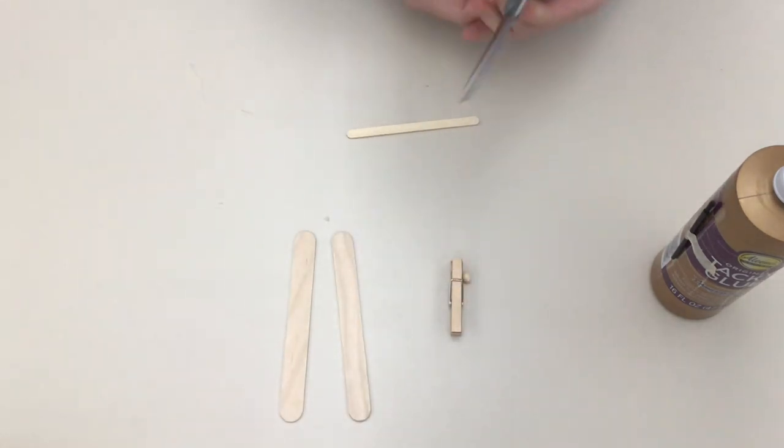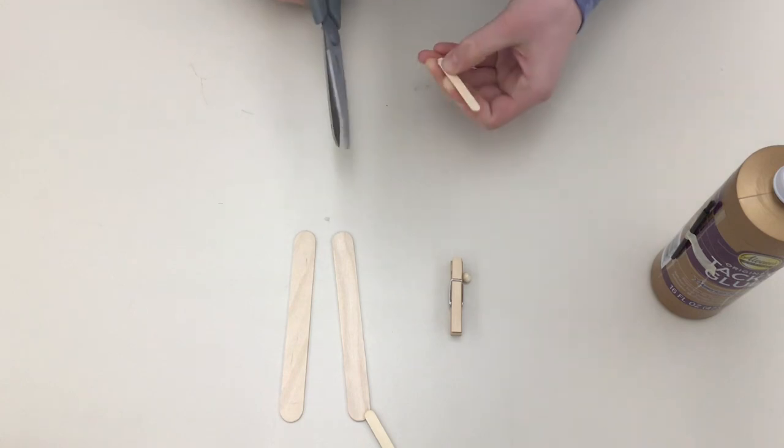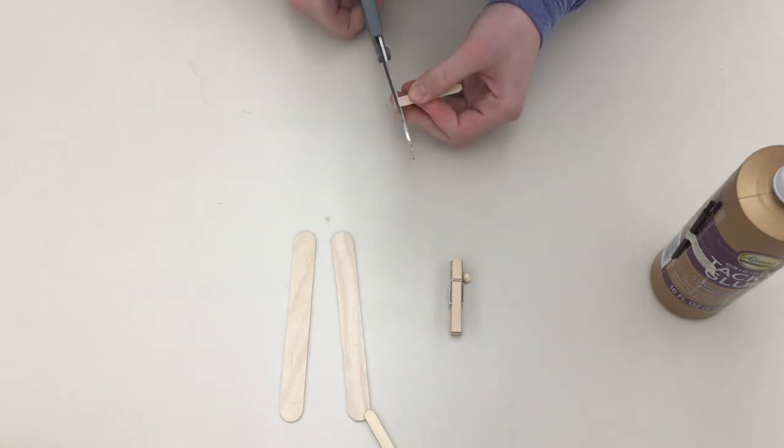To start, take your small craft stick and cut it in half. We're going to use one half to make a tail fin and one half to make the propeller. Once you cut it in half, you're going to want to angle the edges so it's sort of rounded, and then do the same thing on the rounded side just so it's even, and you're going to do that for both halves of the craft stick.